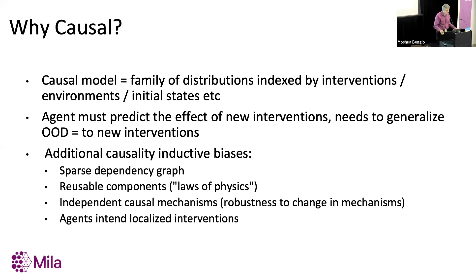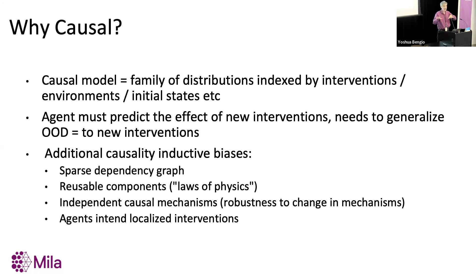What is a causal model? Normally in machine learning we think about a distribution — training data and test data assumed to come from the same distribution. But that's wrong; that's not what happens in the real world, because the distribution changes when we do interventions — the cell behaves differently. A causal model is a family of distributions, and each distribution in that family is specified by what we call an intervention: for example, you change one gene in the cell, or these three genes, or these five genes plus three drugs. There's an exponential number of possible interventions, so that family of distributions is very rich.